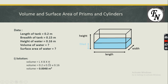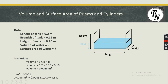The volume formula is: Volume = length × breadth × height. Substituting the values gives a volume of 0.0048 cubic meters — that is the volume of liquid in the tank. Now converting to liters: 1 cubic meter = 1000 liters. Since we are going from a larger unit to a smaller unit, we multiply by 1000, giving 0.0048 × 1000 = 4.8 liters.